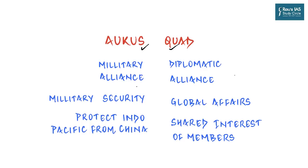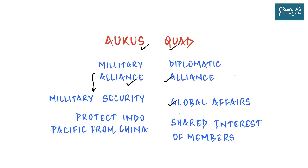A lot of people get confused between AUKUS and QUAD. Both are designed for the same region and share common membership of Australia and the United States. The first important difference is the nature of the alliance. AUKUS is a military alliance — openly and straightforwardly so — whereas QUAD is more of a diplomatic alliance. AUKUS has been specifically conceptualized to deal with the security and military situation in the Indo-Pacific region.